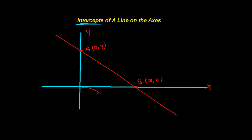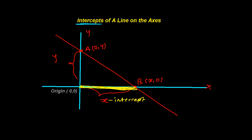So this length is x and this length is y. This length x is called the x-intercept — it means the distance the line is crossing on the x-axis. While this length is called the y-intercept. So if I say y-intercept, it means that much length the line is intersecting on the y-axis.